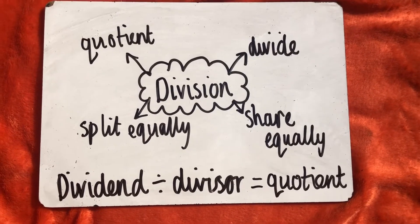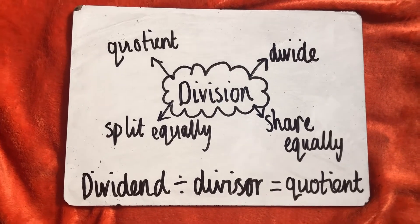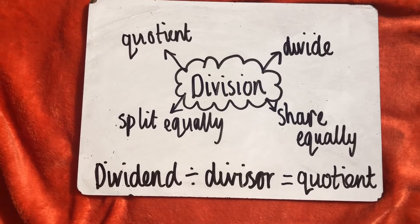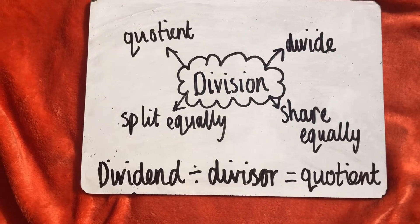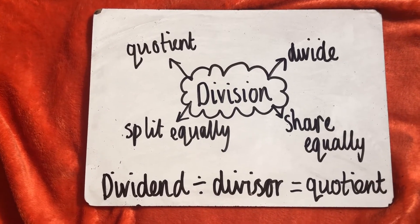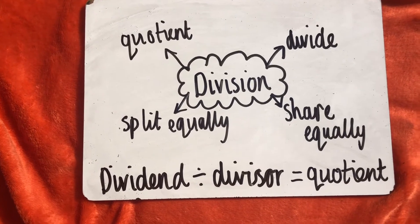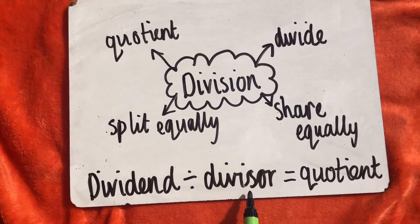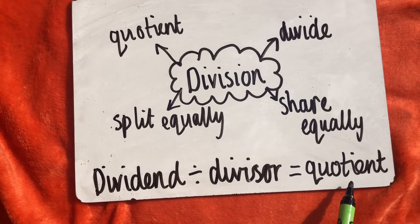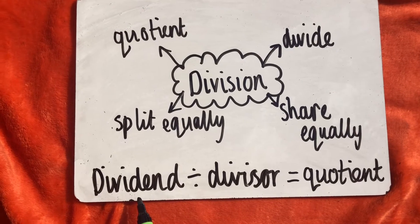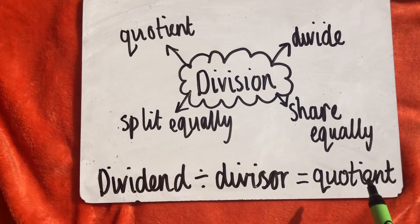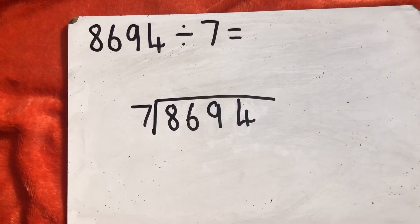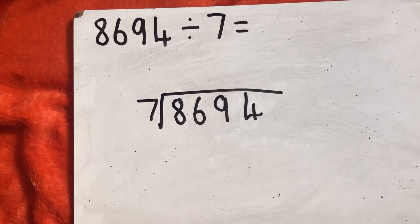Finally we're going to look at division — the short division and the long division method and the differences between them. The words we use for division are divide and share equally, or split equally or evenly. We also use quotient. When looking at our number sentence, it's our dividend divided by our divisor equals our quotient — basically we've got an amount of things, we split them into this many groups, and that's how many are in each group. We're going to look at our short division method, also known as the bus stop method.